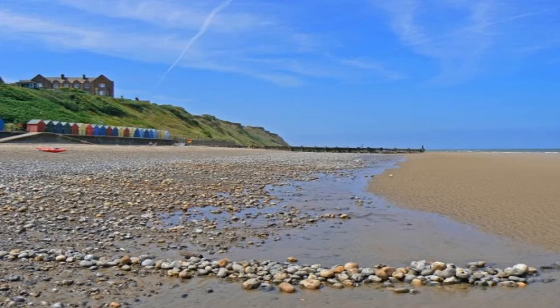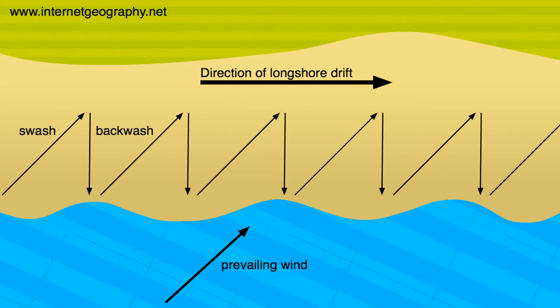Now let's talk about depositional coastlines. Depositional coastlines are sites where sediment builds up. Most of the sediment that builds up is from other sources that were eroded in different areas. A structure formed by depositional coastlines is longshore drift, which is formed by wind-driven waves. As the wind blows, sediment is deposited in different spots every time it washes back onto shore.